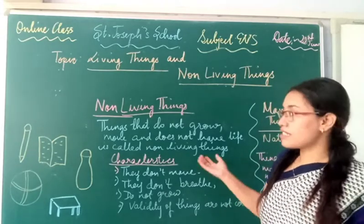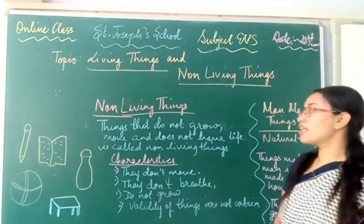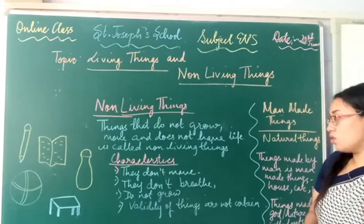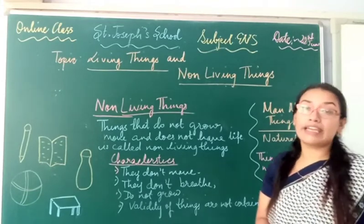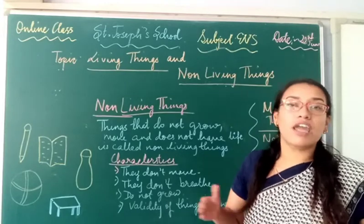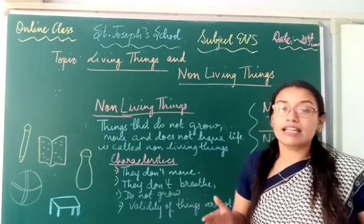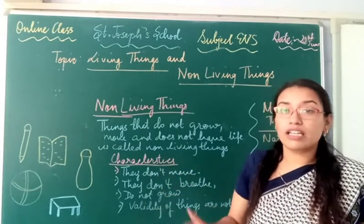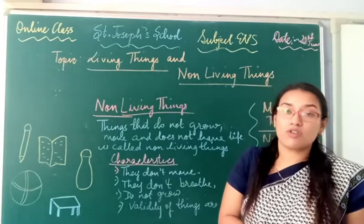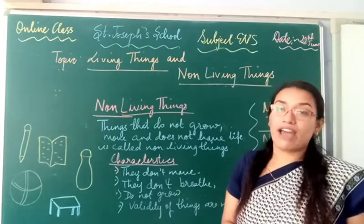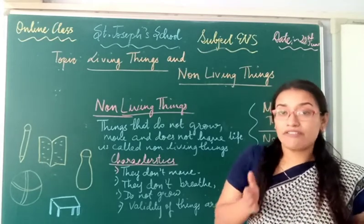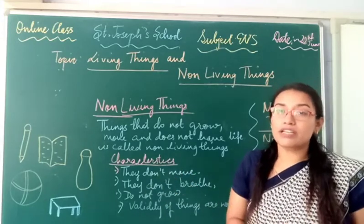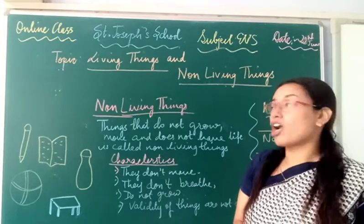Whatever we do to it, it stays very pale and unchanged. Non-living things do not move, do not breathe, and do not grow. Also, the lifespan of non-living things is not limited like living things. Living things live up to a certain age, but non-living things can persist for many, many years. A stone can be there forever. A mountain can be there forever.